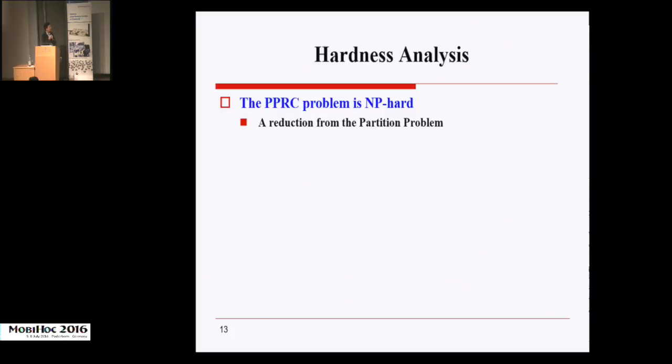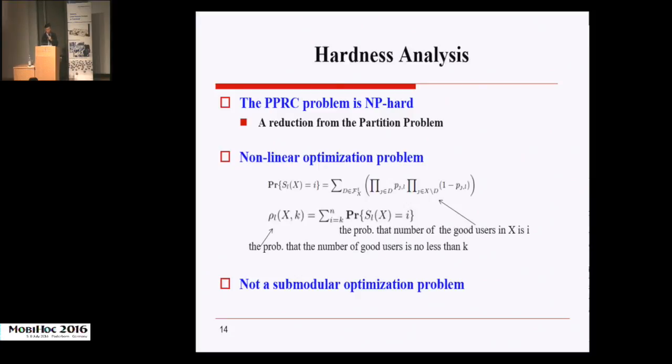We now analyze the hardness of the problem. The PPRC problem is NP-hard. It's proved by reduction from the traditional partition problem. And also, the authors show that it is nonlinear. So let S_i be the number of good users in a group X. We can see that the probability of S_i to be i is nonlinear. Further, rho(l,X,K) denotes the probability that the number of good users is no less than K. We can see that the function rho is not submodular. Therefore, the PPRC problem is not a submodular optimization problem either. So it is a very difficult problem.